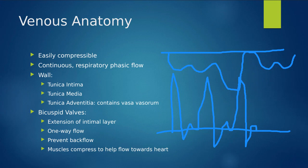Those little arteries travel along the outside of the vein wall, on the tunica adventitia, as a little network of tiny arteries supplying blood flow to the vein wall. That is known as the vasa vasorum.